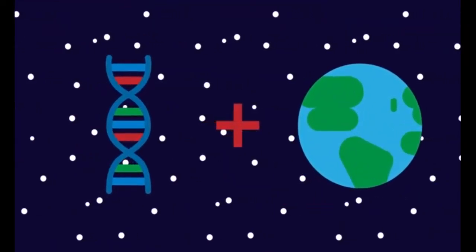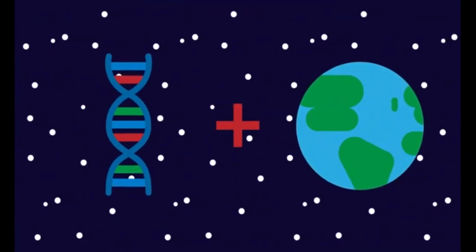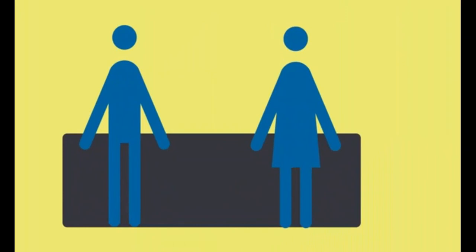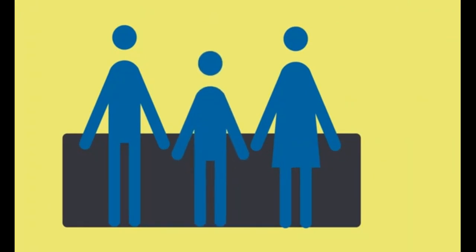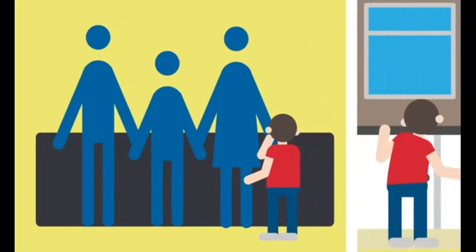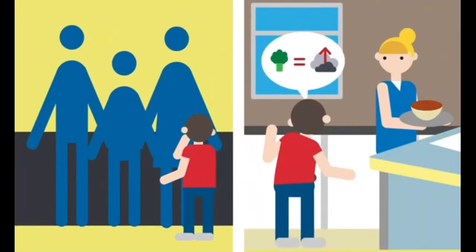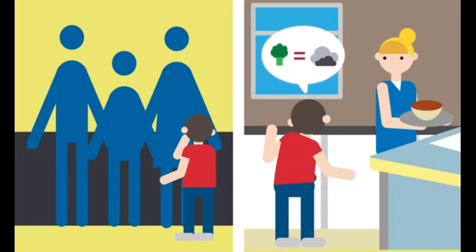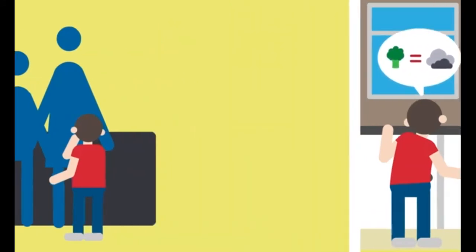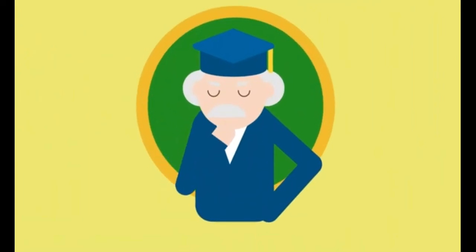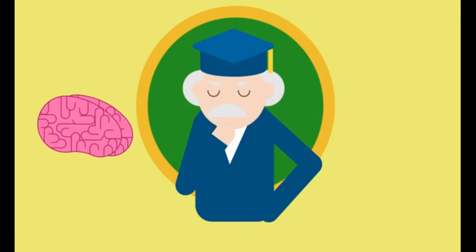Many characteristics are due to a combination of both genetics and the environment. For example, the height a person can grow to is determined by genetics — tall parents tend to produce tall children. However, a person will not grow to their potential height unless they eat a healthy, balanced diet. There is also debate on how much intelligence is due to genetics or the quality of education a person receives. Is intelligence more due to nature or nurture?